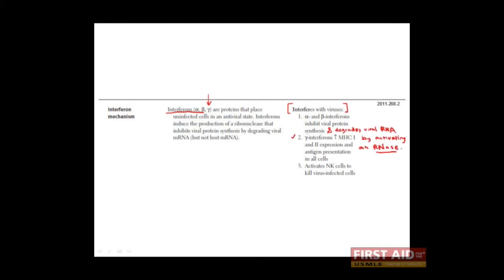Interferon gamma increases the production of MHC class 1 and MHC class 2 in cells that are able to produce these molecules.